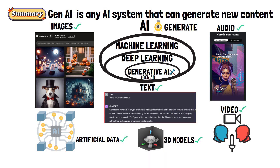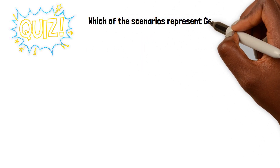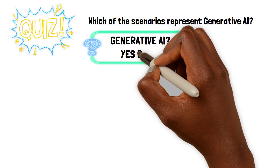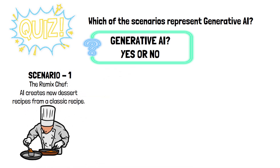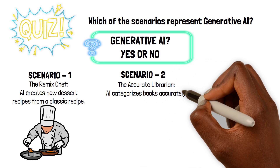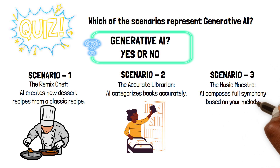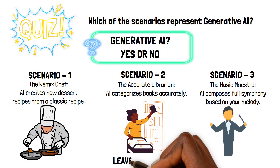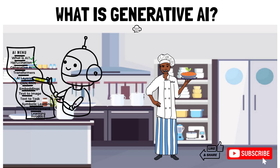Alright, time to wrap things up. But before we go, let's put our new fun knowledge to the test with a pop quiz. Which of the following scenarios below represents an example of Generative AI? Number one, the Remix Chef that creates new dessert recipes. Number two, the Accurate Librarian that categorizes books accurately. And finally, the Music Maestro that composes full symphonies. Please leave your answers in the comment section below. Subscribe to our channel, like, and share this tasty journey with your friends as well.